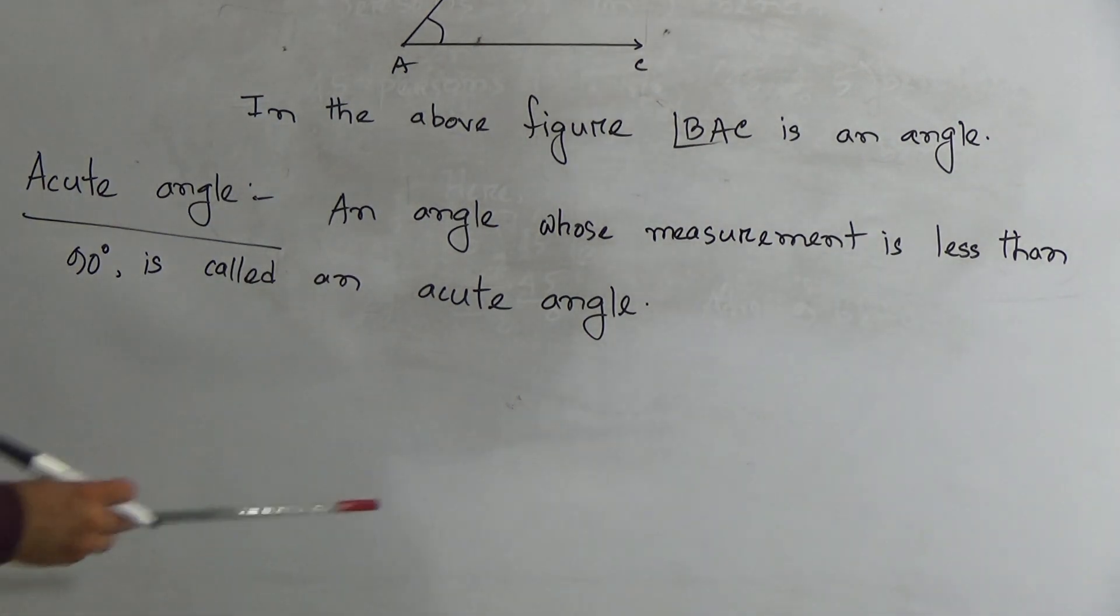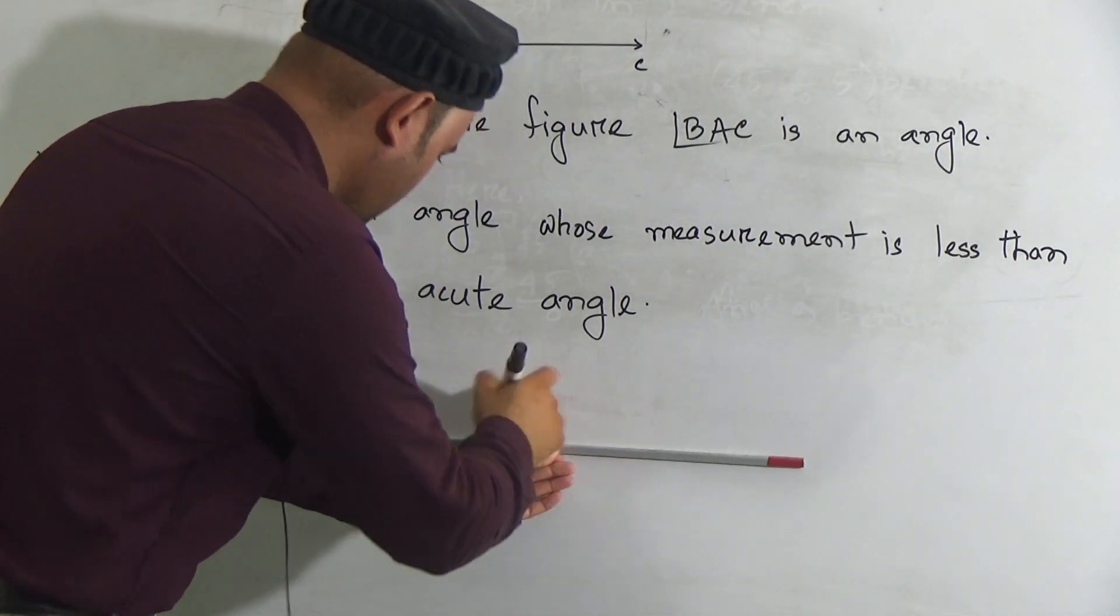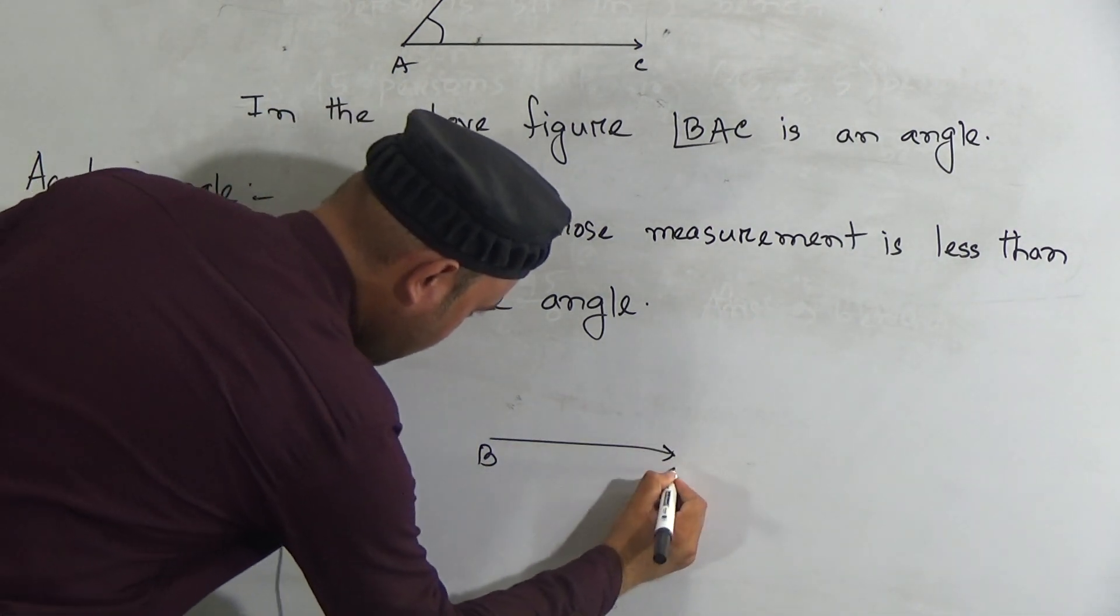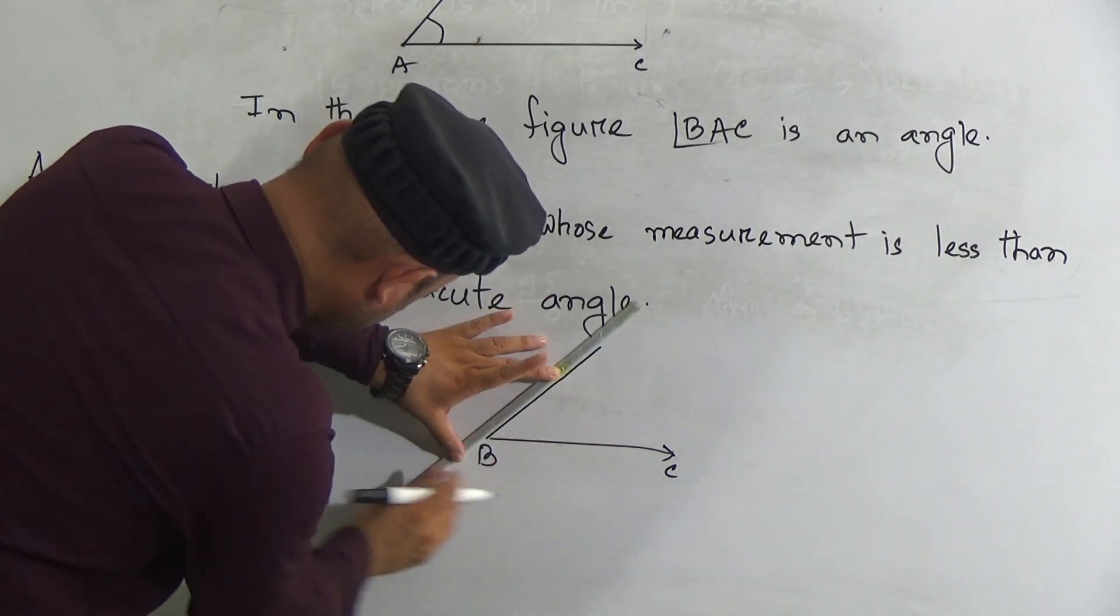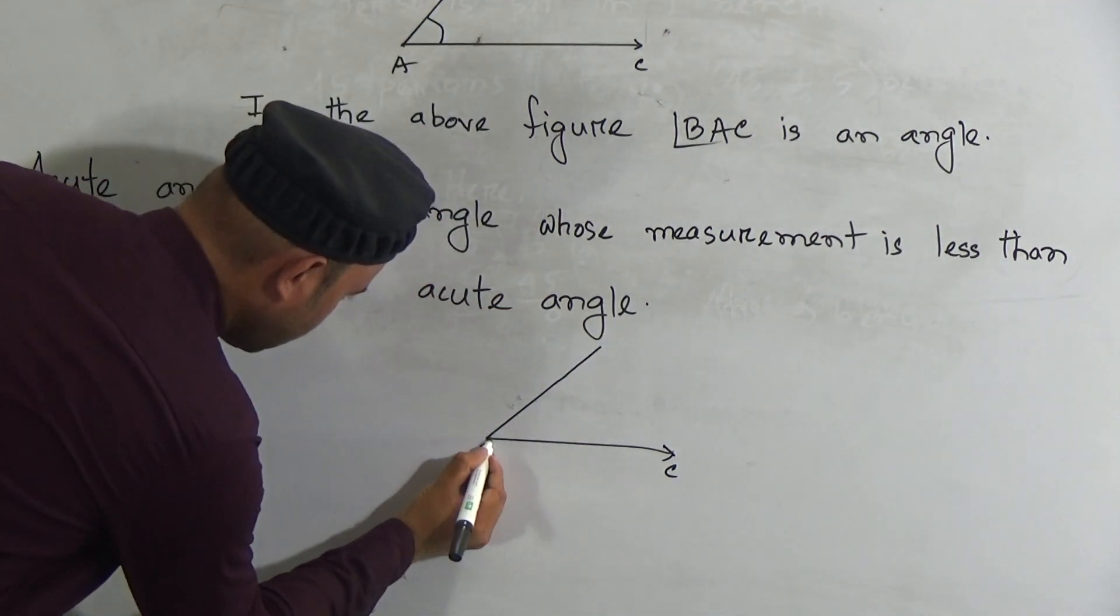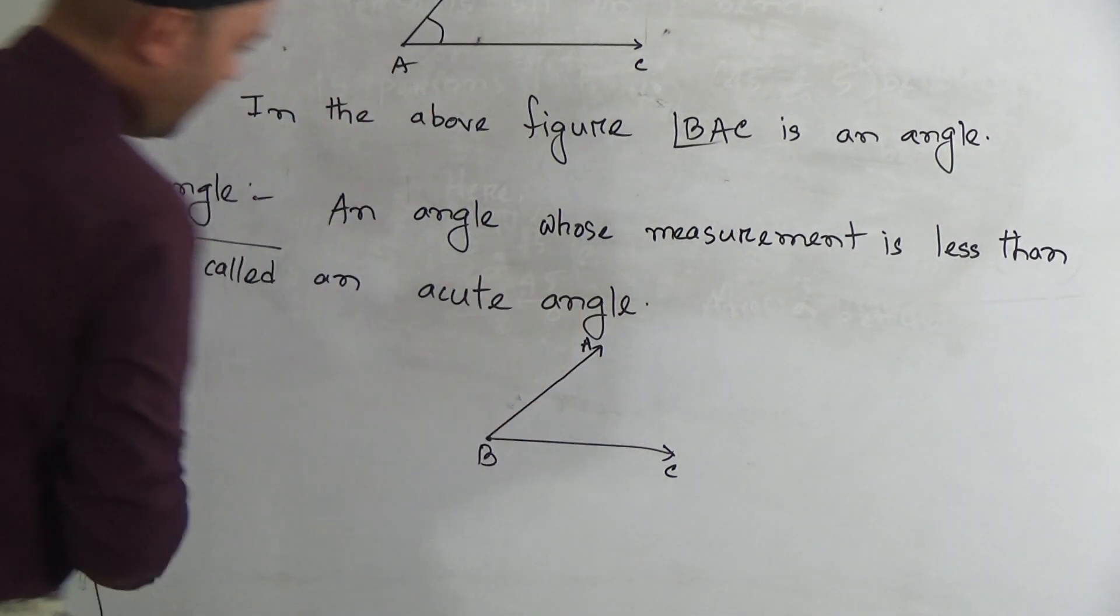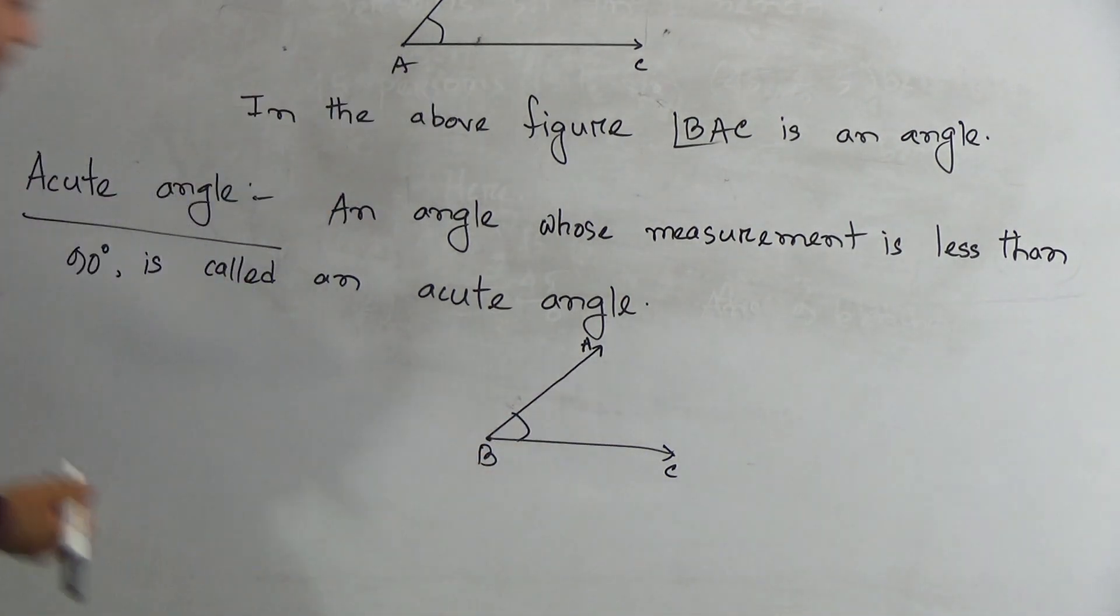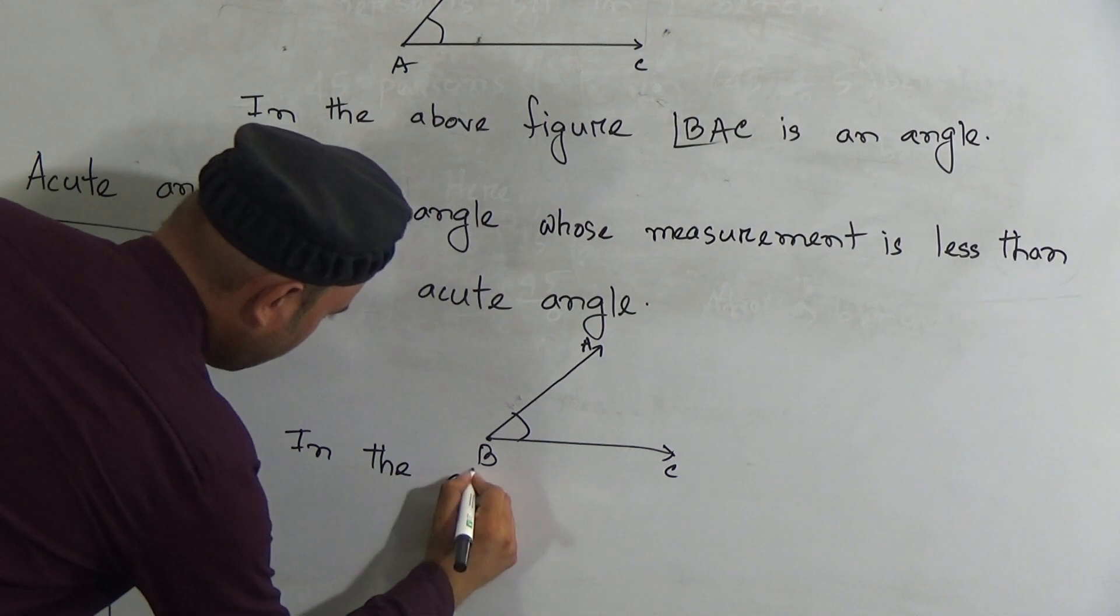So here you have to draw an acute angle. Here again you draw a ray and it is called BC, then draw another ray.